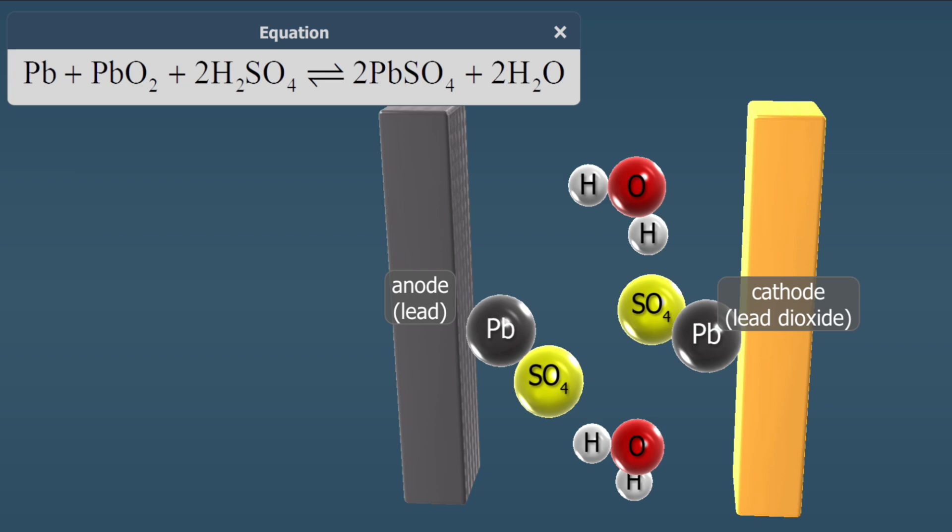Lead-dioxide forms on the positive electrode, the cathode, and lead forms on the negative electrode, the anode.